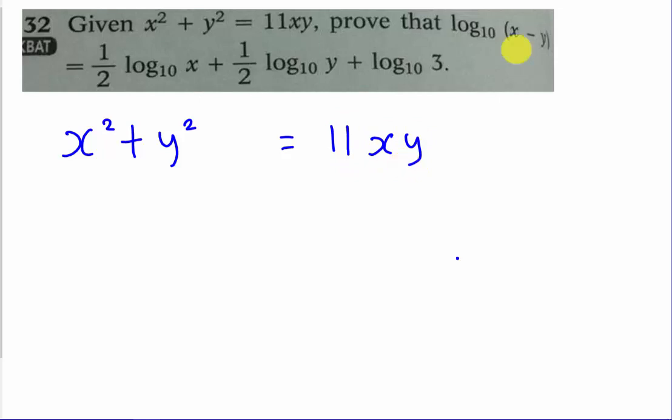For this question, the first hint is how can I get x minus y, because over here I didn't see any minus sign, and at the same time my x power is different. So my first idea is whenever I see x squared and y squared, it links me to something like a plus b squared.